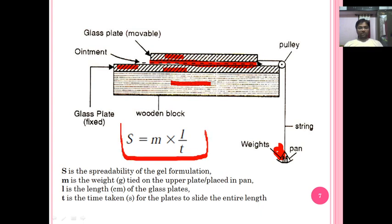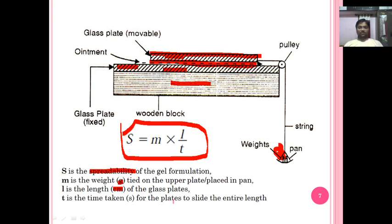Using the equation S = M × L / T, we can calculate the spreadability. S stands for the spreadability of the gel or semi-solid formulation. M is the weight in grams added to the pan. L is the length in centimeters of the glass plate — specifically the upper plate. T is the time in seconds taken for the plate to slide the entire length.